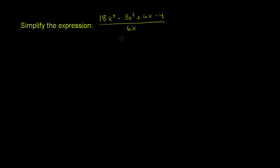So there's a couple of ways to think about them. They're all really equivalent. You can view this up here as being the exact same thing as 18x to the fourth over 6x plus negative 3x squared over 6x, or you could say minus 3x squared over 6x, plus 6x over 6x minus 4 over 6x.